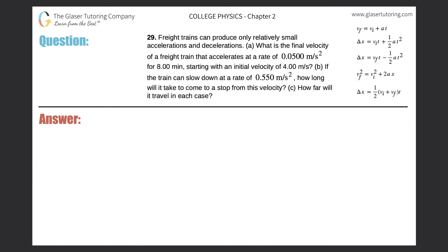Number 29. Freight trains can produce only relatively small accelerations and decelerations. What is the final velocity of a freight train that accelerates at a rate of 0.05 meters per second squared for 8 minutes, starting with an initial velocity of 4 meters per second?